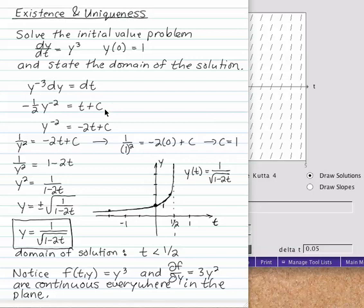And now we start to solve for y. Multiply both sides by minus 2. Express y to the minus 2 as a fraction. Find that c is equal to 1 with the initial condition.